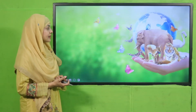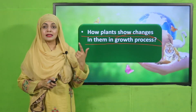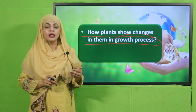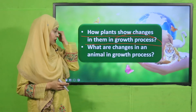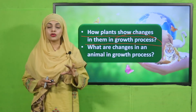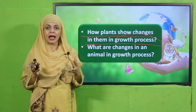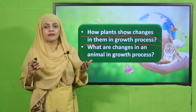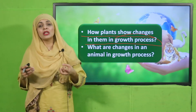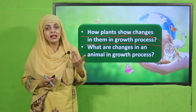Evaluation: how do plants show changes during the growth process? They change in size, stem length, stiffness, and color. What are the changes in an animal during growth? Animals also grow in size, change color, and become stronger over time. Plants show strength through their stem, while animals show strength through their legs and feathers as they grow.